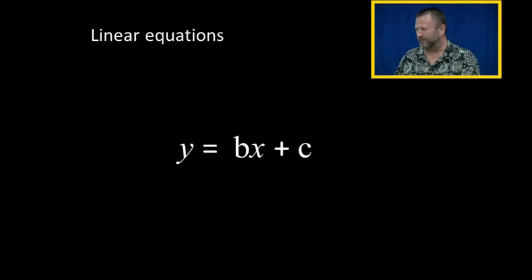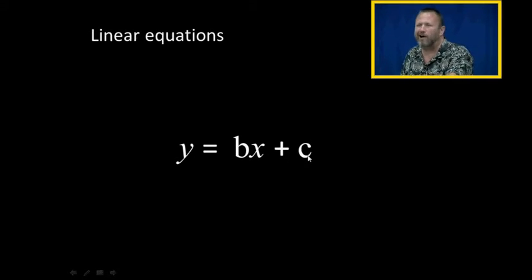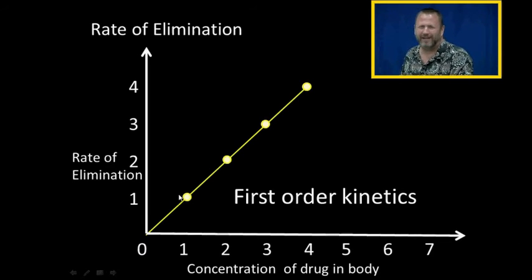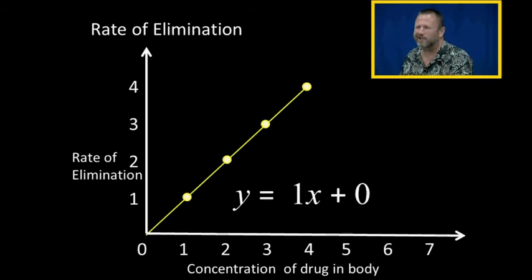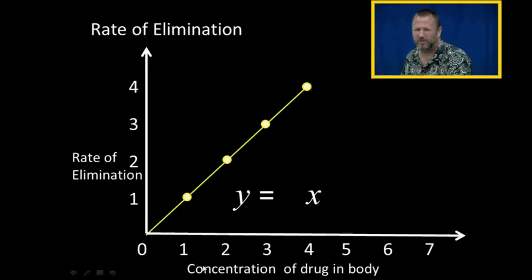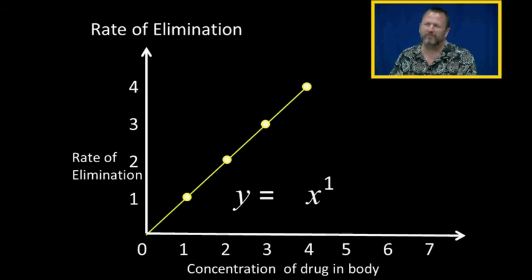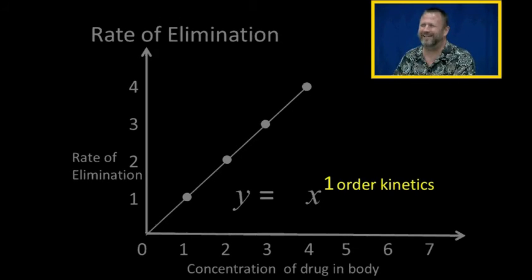Why? It comes from linear equations, and they're called linear equations because if you plot them on a chart, they draw straight lines. Y is equal to the coefficient of X plus a constant C. Here again is first-order kinetics, where the rate of elimination depends on the concentration of drug in the body. If I make the coefficient of X equal to one and the constant equal to zero, I have Y equals X — plotted right here. Keep in mind that X is equal to X to the first power. See that little one? That's where first-order kinetics comes from.